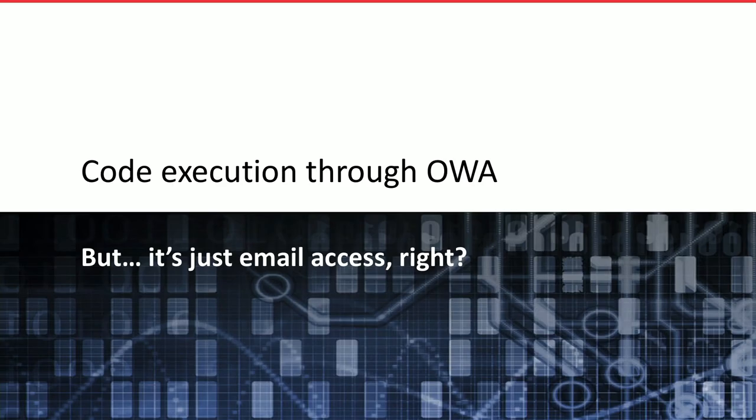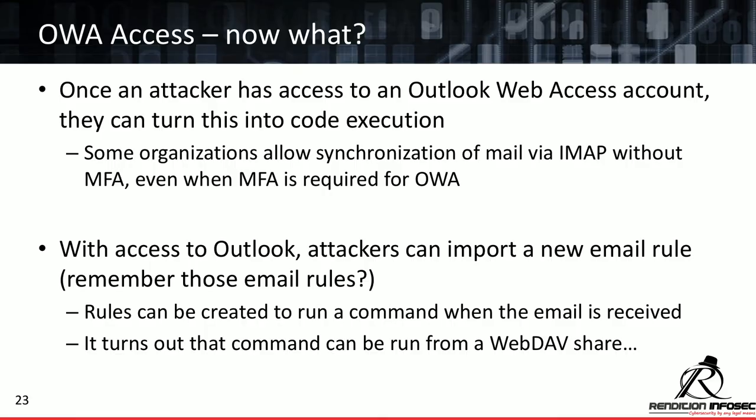Code execution through Outlook Web Access — I love this. Once an attacker has access to Outlook Web Access (OWA) or Office 365, they can turn this into code execution. Many organizations allow synchronization of mail via IMAP without multi-factor authentication, even when MFA is set up for OWA. Once we have access to Outlook, we can import new email rules that run commands on their local machine once the user logs back in. The next time they open up Outlook, without any interaction from them, commands automatically execute and we get shell on their machine.